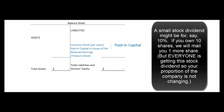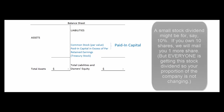A stock dividend is the same kind of idea — we're going to divide the pie up and set the company up into more pieces. Maybe we declare a 10% stock dividend. That means if you had 10 shares before the dividend, after the stock dividend you'll have 11 shares — 10% more. But you still own that same percentage. So if you owned 5% of the company before the stock dividend, you still own 5% after.